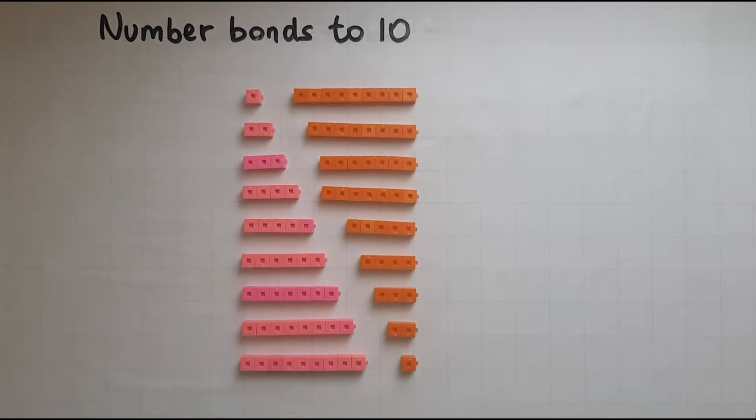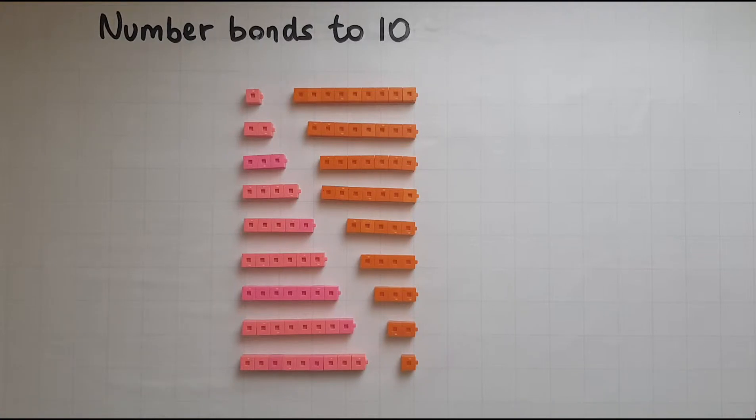In this video we'll learn about number bonds to 10. Number bonds are pairs of numbers which when you add together give you a fixed answer all the time. So the number bonds to 10 are pairs of numbers that when we add will give an answer of 10.